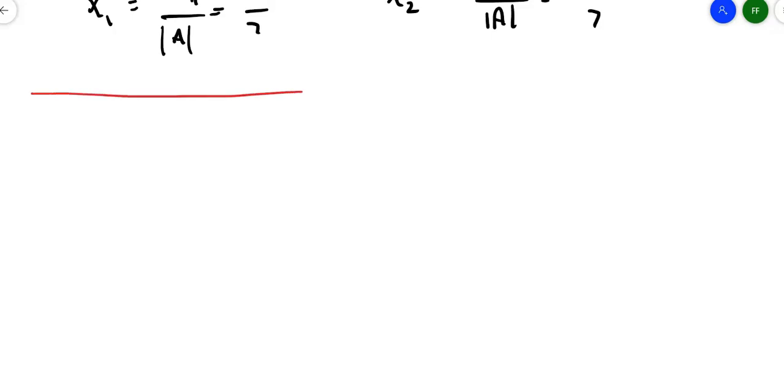So let's say I've got this example here. I've got x sub 1 plus 2x sub 3 is equal to 6. I've got negative 3x sub 1 plus 4x sub 2 plus 6x sub 3 is equal to 30. And I've got negative x sub 1 minus 2x sub 2 plus 3x sub 3 is equal to 8.